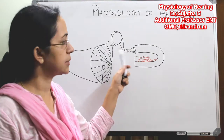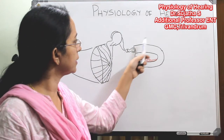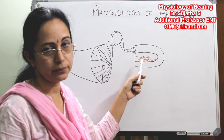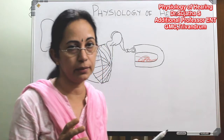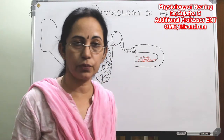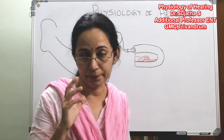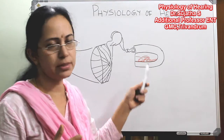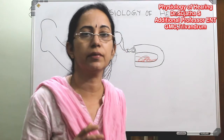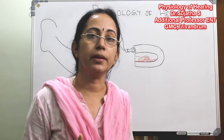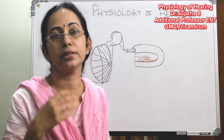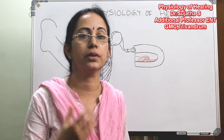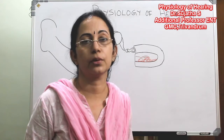The stapes footplate is vibrated, and this leads into the inner ear — the scala vestibuli, scala tympani, and scala media — which contain fluid. The vibration of the footplate of the stapes causes vibrations in the perilymph. These vibrations of the inner ear cause movement of the basilar membrane and the organ of Corti. This mechanical sound energy is transduced to electrical impulses, which travel through the auditory nerve into the brain.